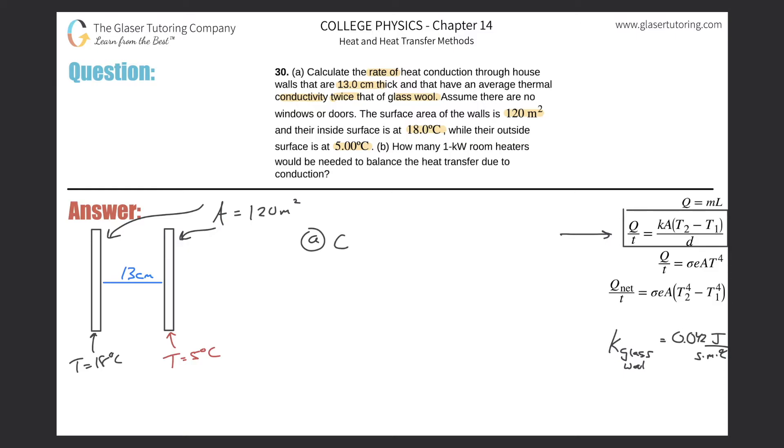Q over T. What's Q? That's heat energy, measured in joules. What's T? That's time, measured in seconds. And what's a joule per second? A watt. This thing is power, ladies and gentlemen.